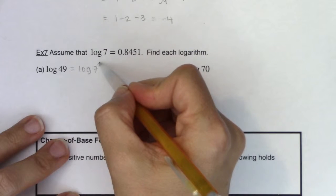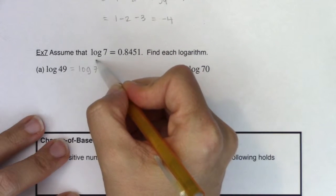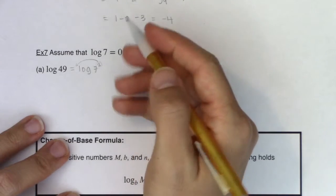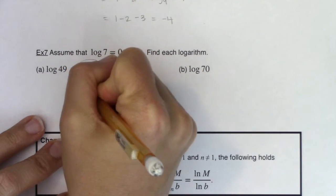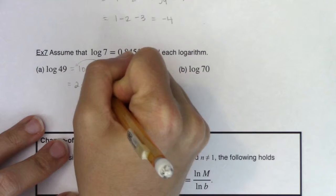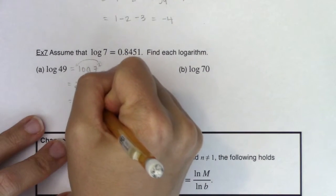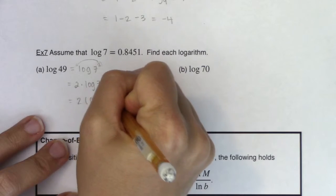Right? And what are we allowed to do with that exponent? Well, we know from the power property that we can bring that down in front, and I can say this is 2 times log of 7. And I happen to already know log of 7, that is 0.8451. Okay?